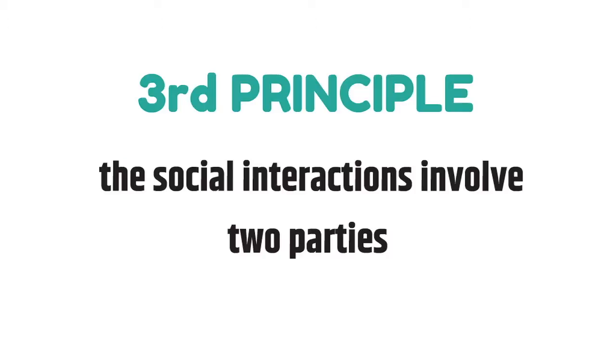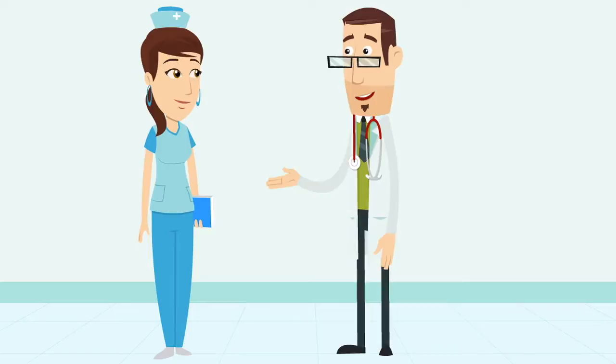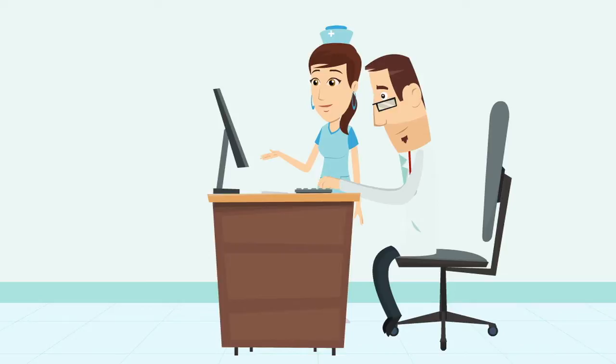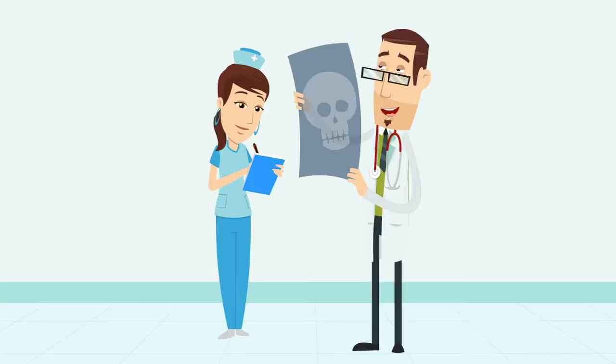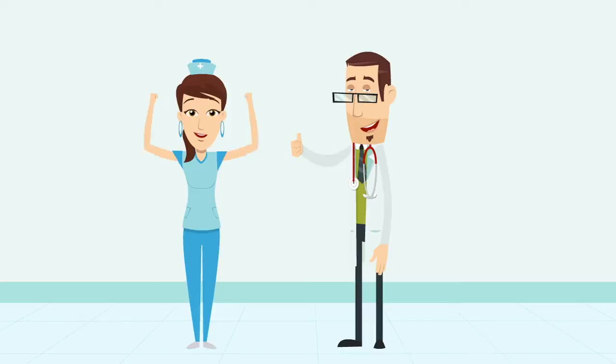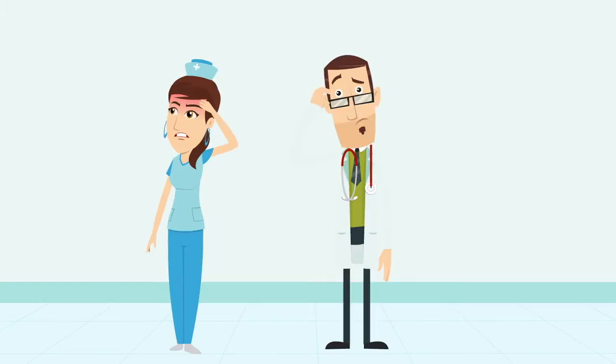The third principle demonstrates that social interactions involve two parties. We engage in social interactions because we have something to gain from them, and others interact with us because they have something to gain from our mutual exchange. The interaction creates an interdependent relationship in which people are mutually reliant on each other. As long as two people feel that their rewards are exceeding their costs, the social interaction will continue. If at any point a person feels that their costs are exceeding their rewards, they're more likely to stop the interaction.